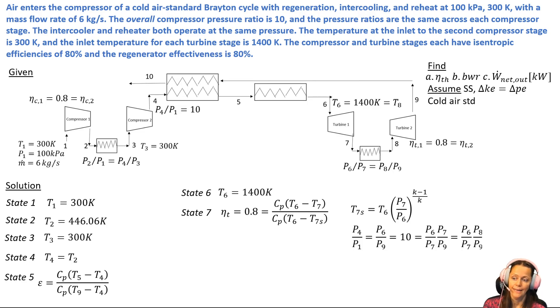And then I'm also told that the pressure ratio across the turbines are the same, so P6 over P7 is equal to P8 over P9. So I could put that in terms of P6 over P7 squared, and then I can solve for P6 over P7 and then just flip it and I get P7 over P6.